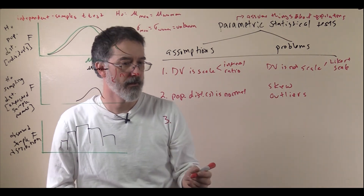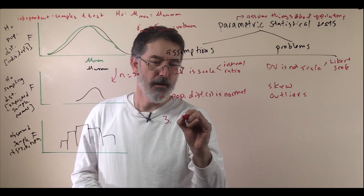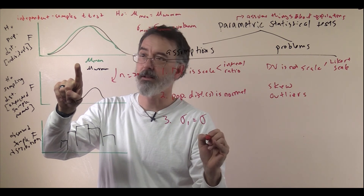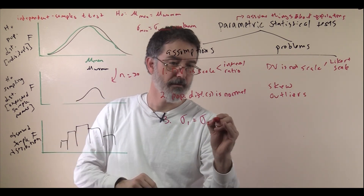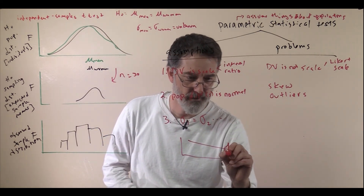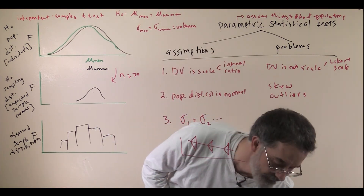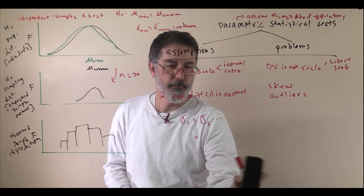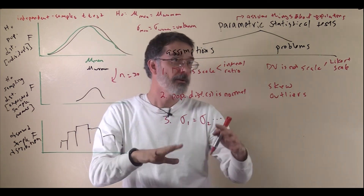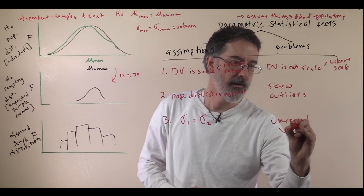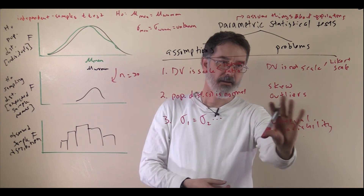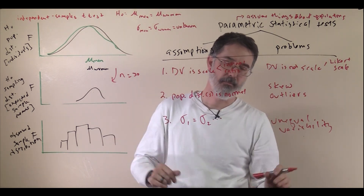A third assumption for these parametric tests is that the population standard deviation for one group, such as men, is the same as the population standard deviation of another group, such as women — and this should be the same for every group. Similarly, in regression, it assumes that the variability is constant across all values. This is a standard assumption across lots of our tests, though there are variants of the tests that do not assume that. If you observe unequal variability in your sample, you would want to look more carefully at your particular problem to find the best solution.